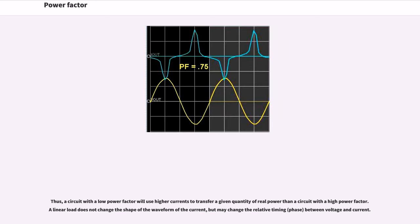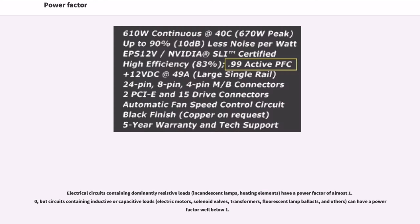Thus, a circuit with a low power factor will use higher currents to transfer a given quantity of real power than a circuit with a high power factor. A linear load does not change the shape of the waveform of the current, but may change the relative timing between voltage and current. Electrical circuits containing dominantly resistive loads have a power factor of almost 1.0, but circuits containing inductive or capacitive loads can have a power factor well below 1.